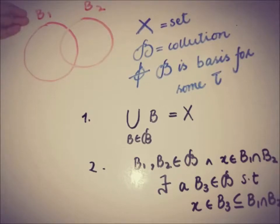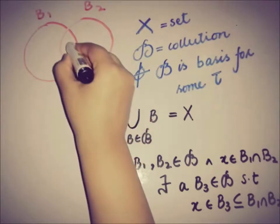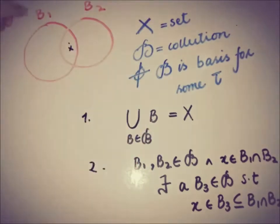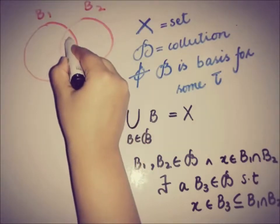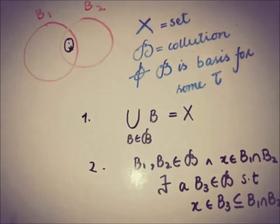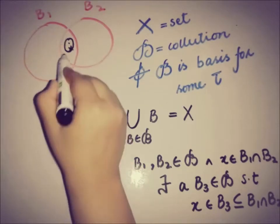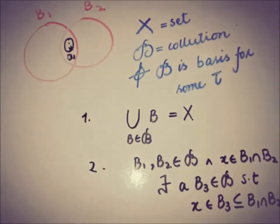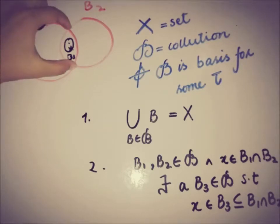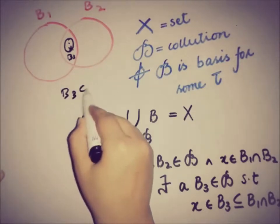From a graphical point of view, we can understand the second condition as follows: if B1 is a member of the basis and B2 is another member of the basis, and x is an element from the intersection of B1 and B2, then there must exist a basis element B3 such that B3 contains the point x and B3 is also a subset of that intersection.